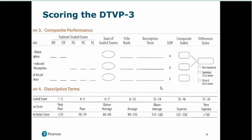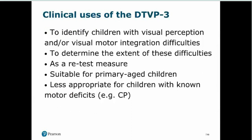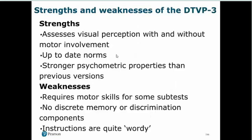Clinical uses of the DTVP3 include identifying children with visual perception and visual motor integration difficulties, and determining the extent of these difficulties relative to same-age peers. Standard scores and percentile ranks show exactly how far from the mean a child's performance is. It can be used as a retest measure — I'd recommend a minimum of six months before re-administering. It's suitable for primary-age children, but less appropriate for children with known motor deficits since that component will interfere.